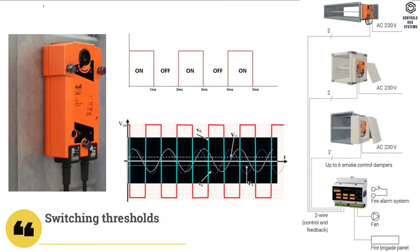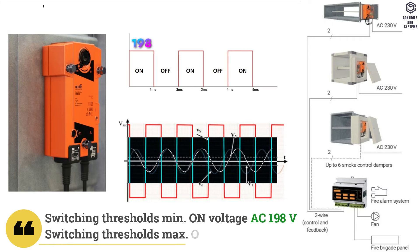Switching thresholds: minimum on voltage is AC 198, maximum off voltage is AC 50.